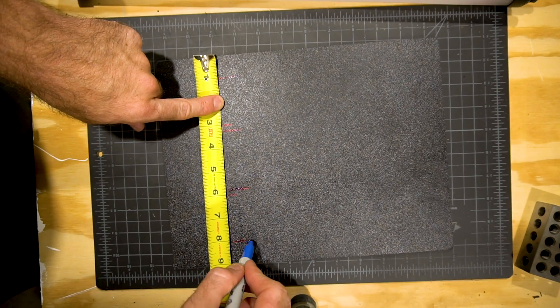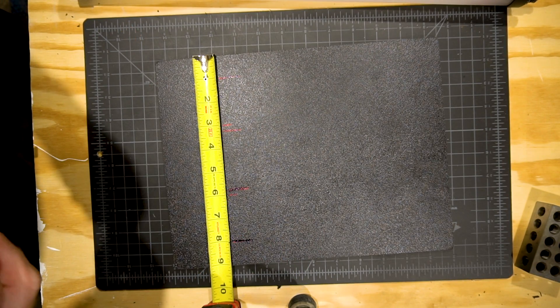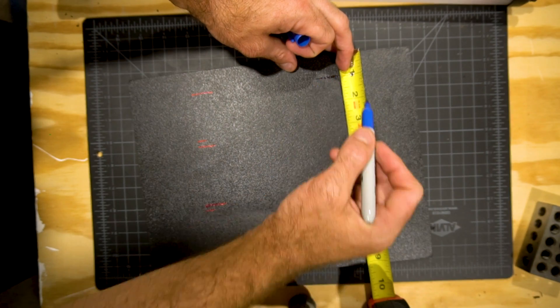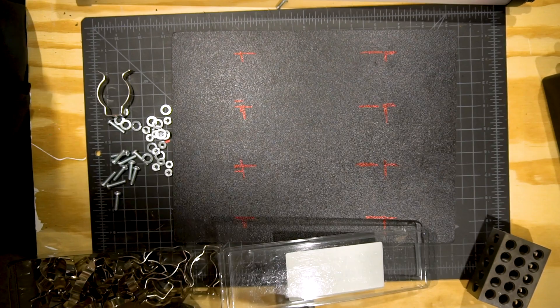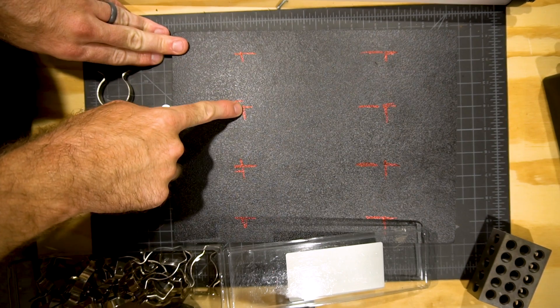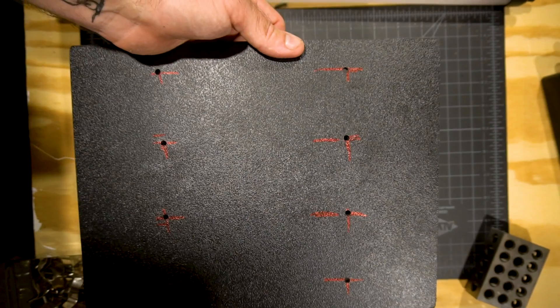Measure and make marks at 1 inch, 3 and 1 quarter inch, 5 and 3 quarters inch, and 8 inches along the shorter of the sides. This will give us a little room between each of the lights. Now repeat on the other side. Then mark at the 3 inch line and the 9 inch line on the opposite length. This should give us 8 areas where our light clamps are going to go.